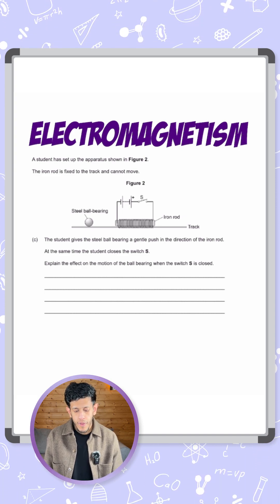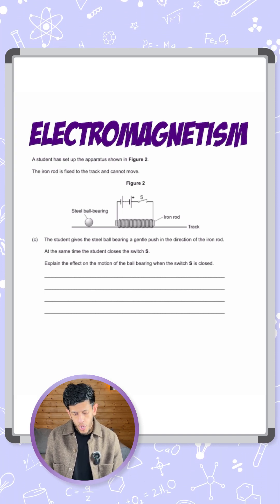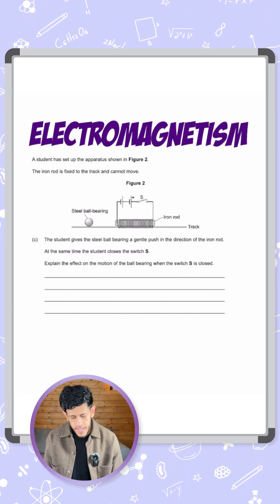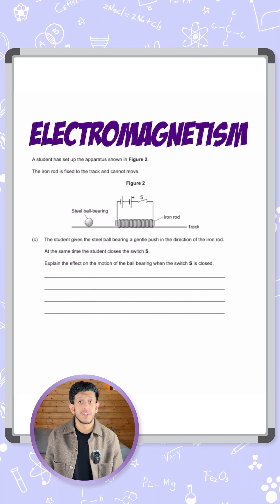The student gives the steel ball bearing a gentle push in the direction of the iron rod and at the same time the student closes the switch S. Explain the effect on the motion of the ball bearing when the switch is closed.